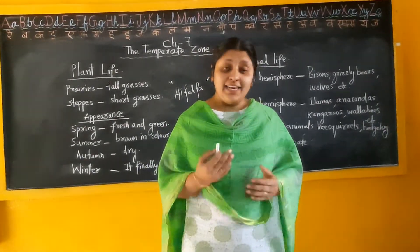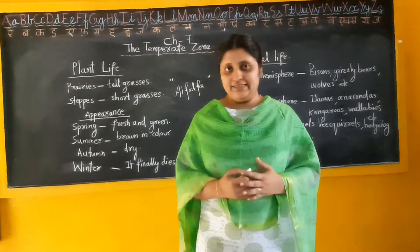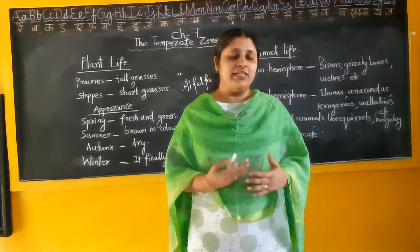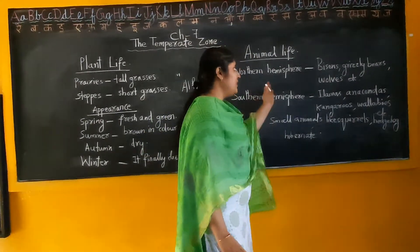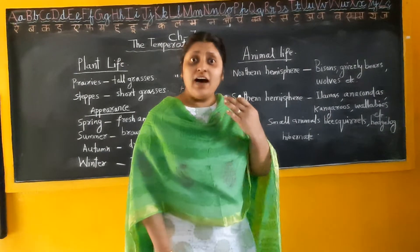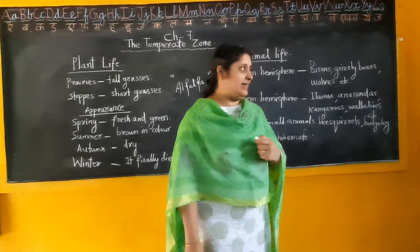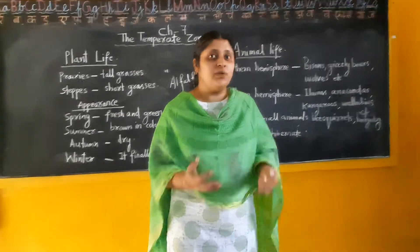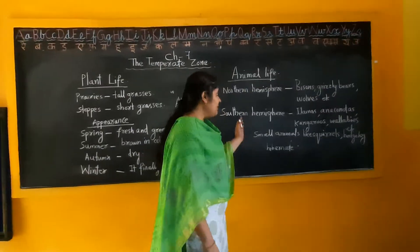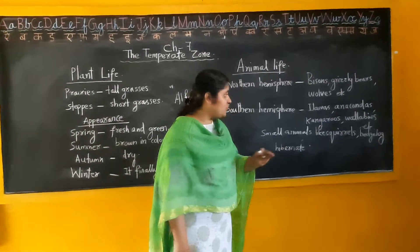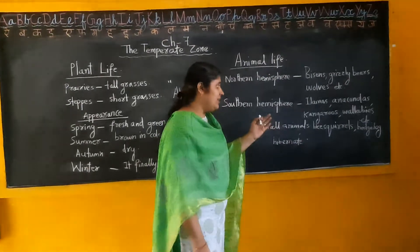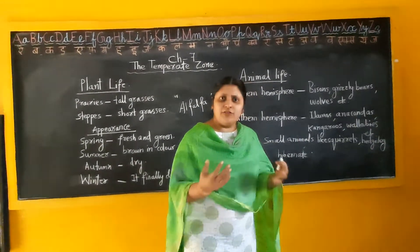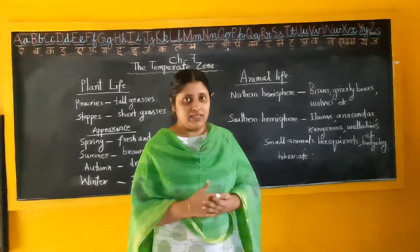Now we are going to learn about the animal life in the temperate grasslands. In the northern hemisphere grasslands, we can see large animals like bison, grizzly bears, and wolves. In the southern hemisphere grasslands, we can see llamas, anacondas, kangaroos — Australia is the home of kangaroos — as well as wallabies and koalas.